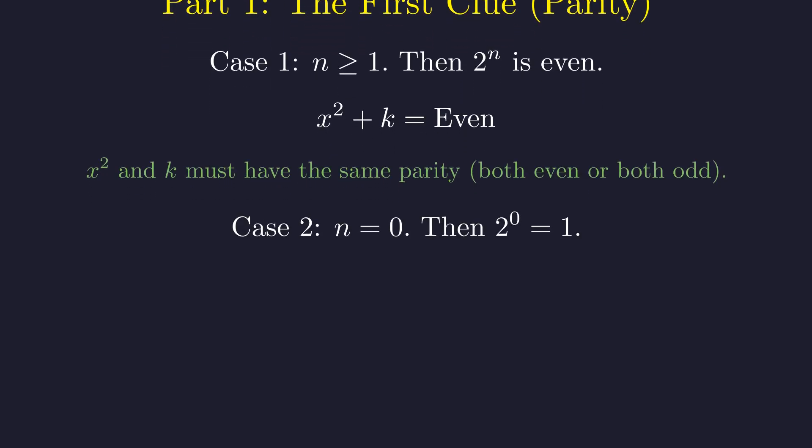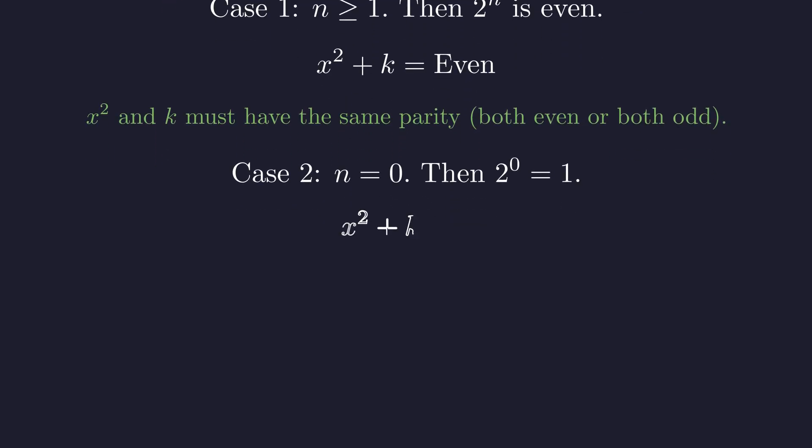The only exception is when n equals 0. In this case, 2 to the 0th power is 1. So if n is 0, the equation becomes x squared plus k equals 1, which means x squared is 1 minus k.